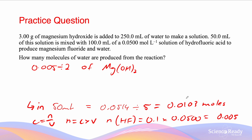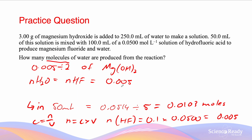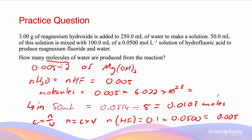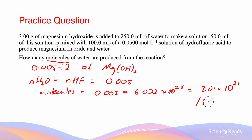The number of moles of water formed — remembering from the stoichiometric ratio — must be equal to the number of moles of hydrofluoric acid, since they are in a 1 to 1 ratio. So the number of moles of H₂O equals the number of moles of HF, which equals 0.005. Since the question asks for molecules of water, we multiply by Avogadro's number: molecules equals 0.005 multiplied by 6.022 times 10²³, which equals 3.01 times 10²¹. Make sure to give your answer to three significant figures, as that is the least given in the question.